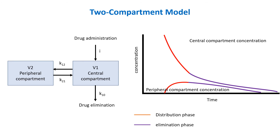The other phase is the elimination phase, marked by a slower decline sustained by the redistribution of drug from the peripheral tissue stores. In other words, in the two compartment model there are effectively two half-lives: distribution half-life and elimination half-life. Distribution half-life represents the time it takes for the drug concentration in the central compartment to decrease by half during the initial rapid distribution phase. Elimination half-life is the time taken for the total drug concentration in the body to decrease by half during the slower elimination phase after distribution equilibrium has been achieved.